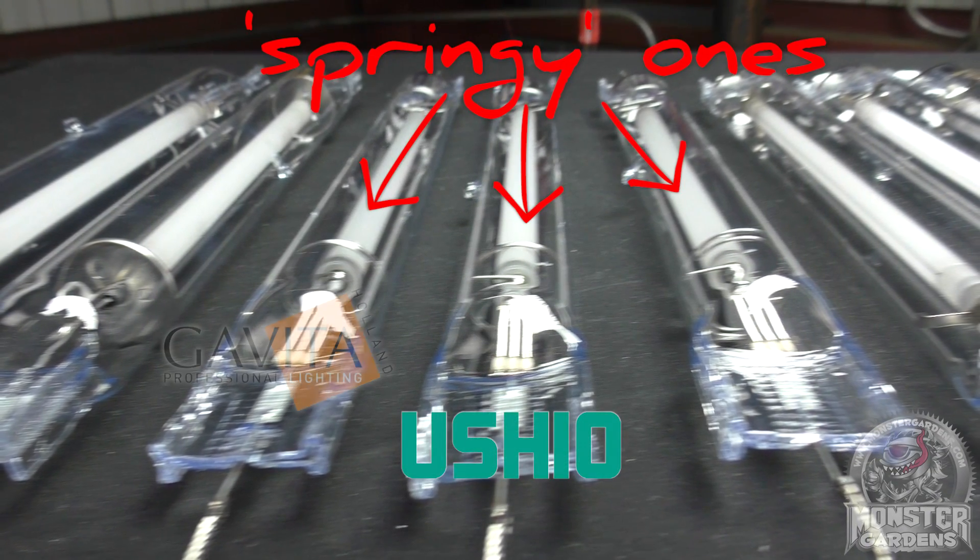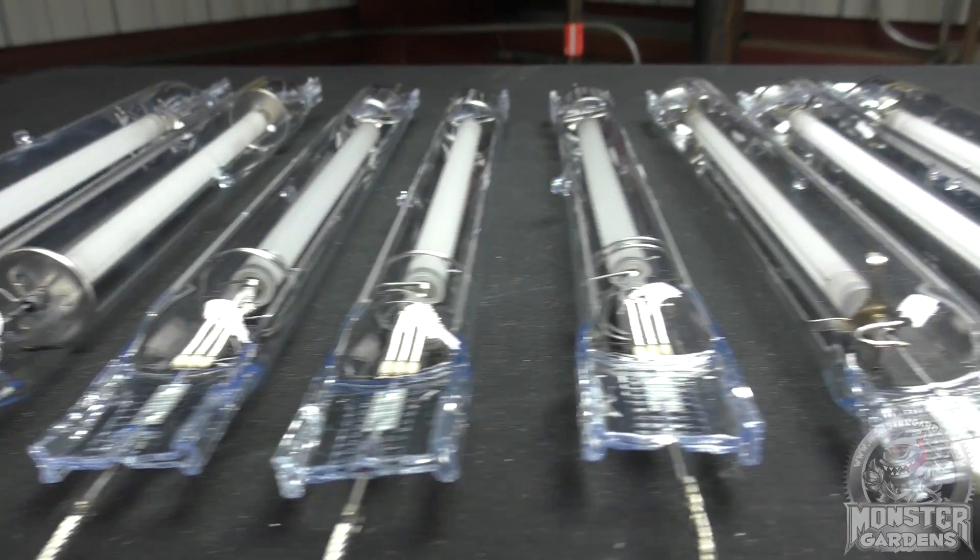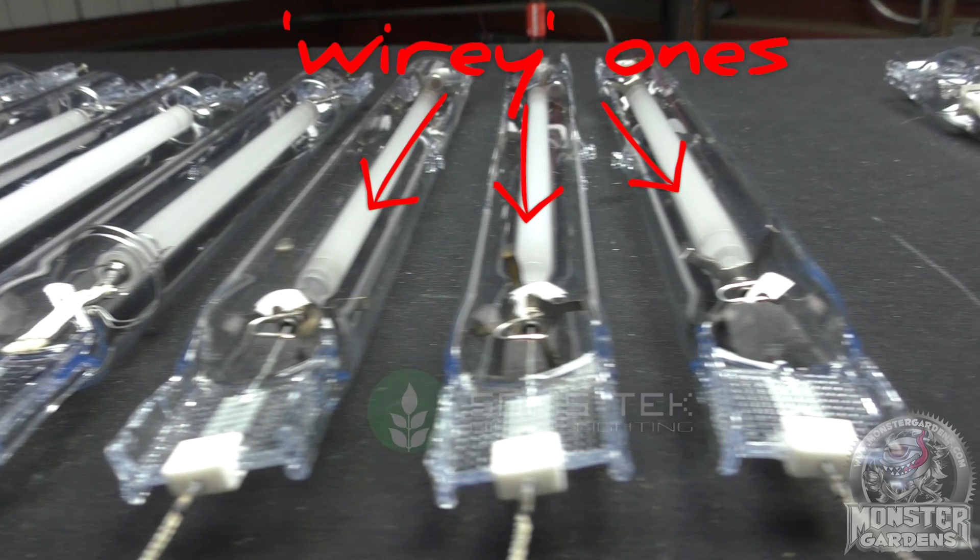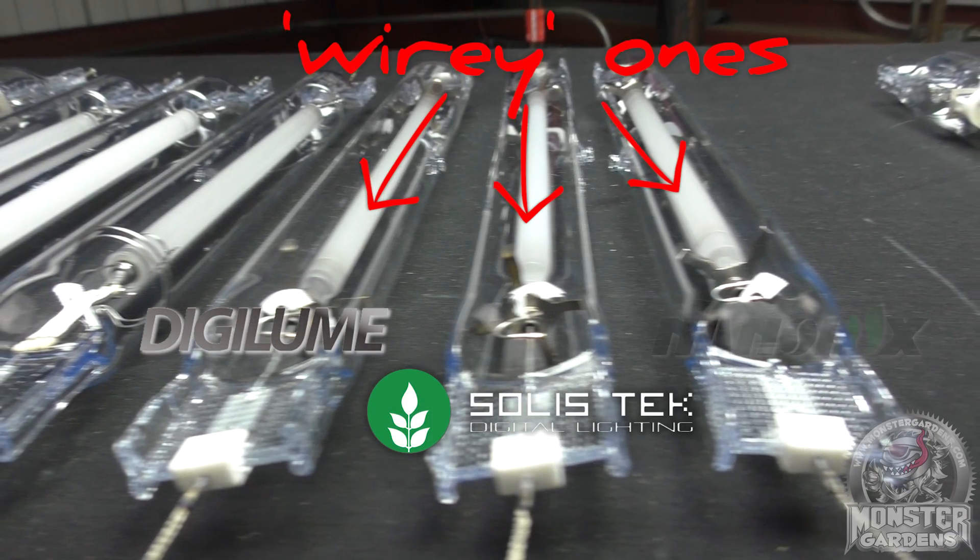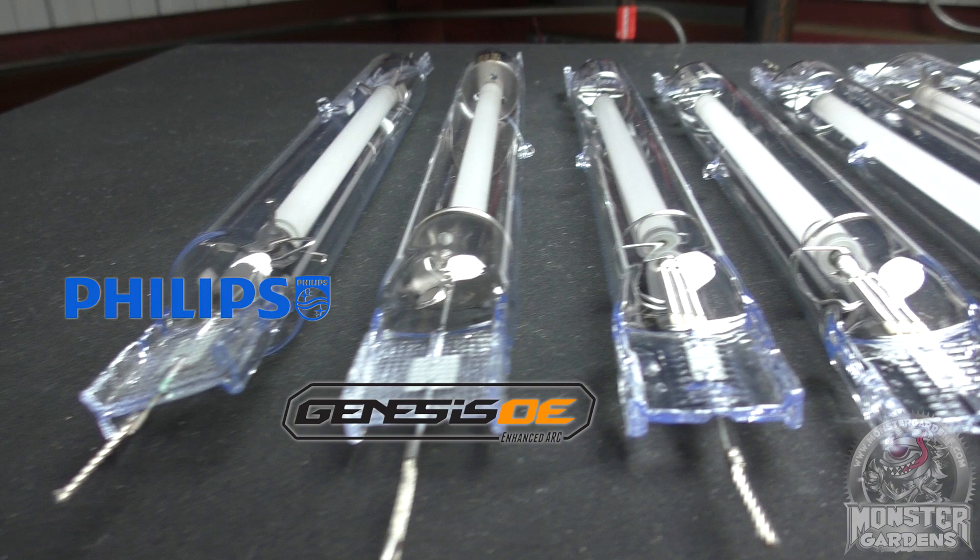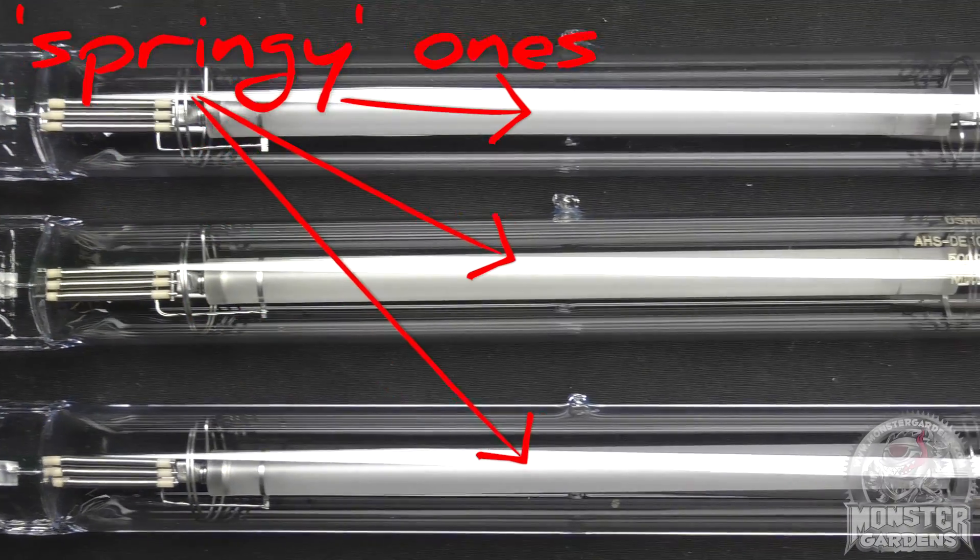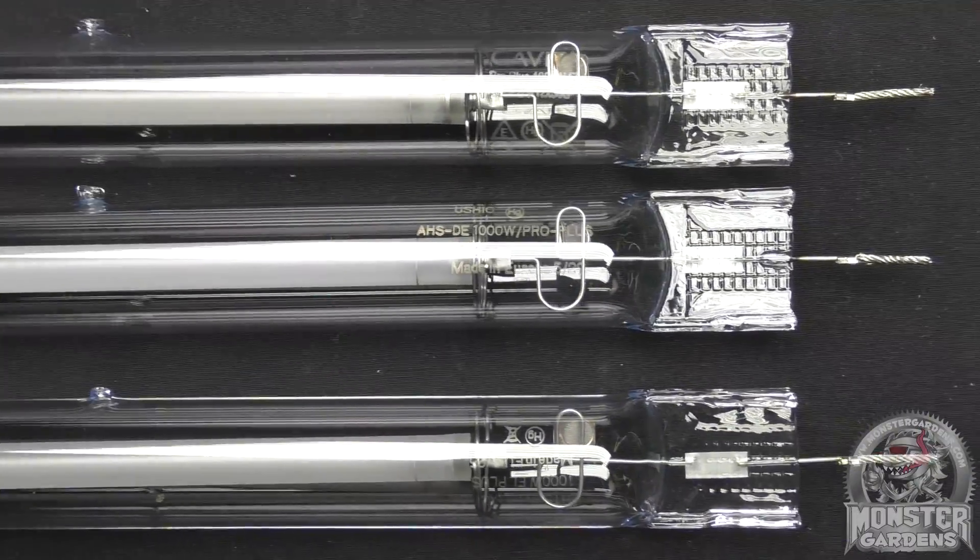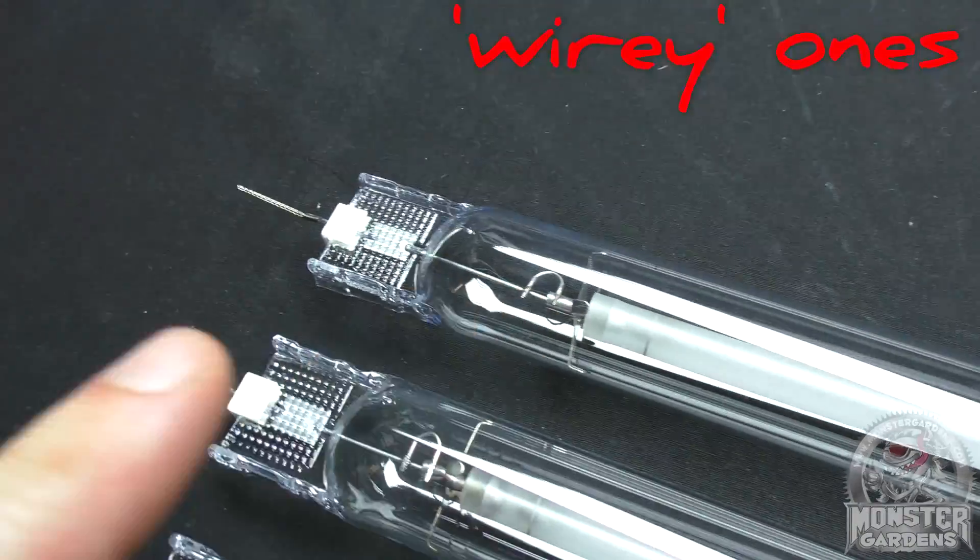What I call the springy ones, the Ushio, the Gavita, and the E-Papillon, and the wire-based ones, the Solastek, the Digilume, and the Nanolux. The Genesis and the Philips had completely different designs. Whether this means they have a common design ethos, or that there are only a set number of ways to make a DEHPS bulb, is unclear.